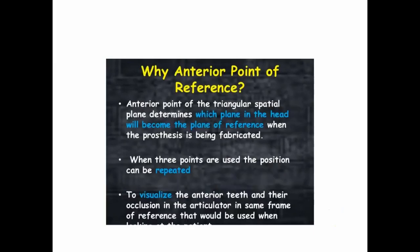Then comes the importance of the anterior reference point. The anterior reference point and the two posterior reference points form a triangular spatial plane, which determines which plane in the head will become the plane of reference for which the prosthesis is fabricated. When these three points — two posterior and one anterior reference point — are used, the position can be repeated, and it is helpful in visualizing the anterior teeth and their occlusion in the articulator.